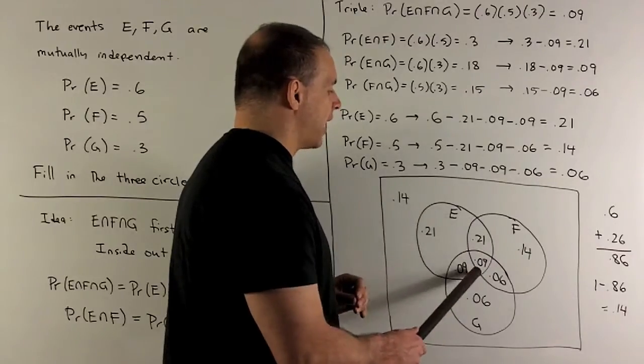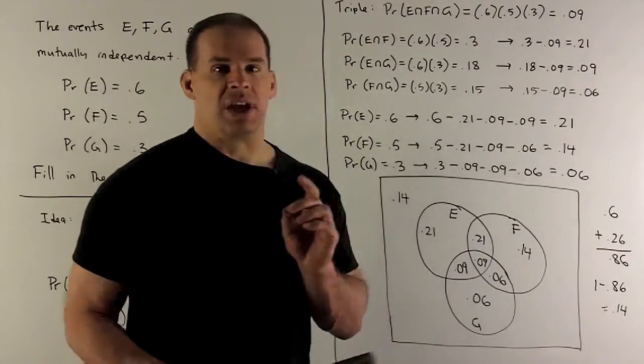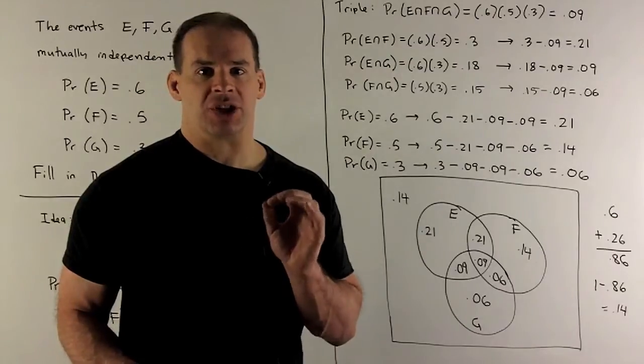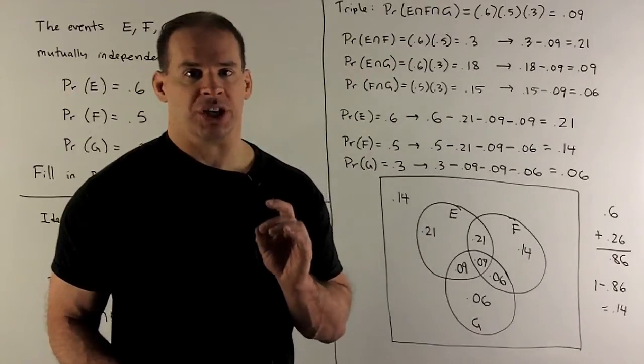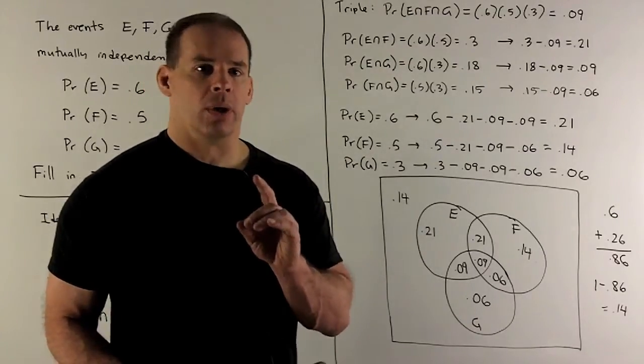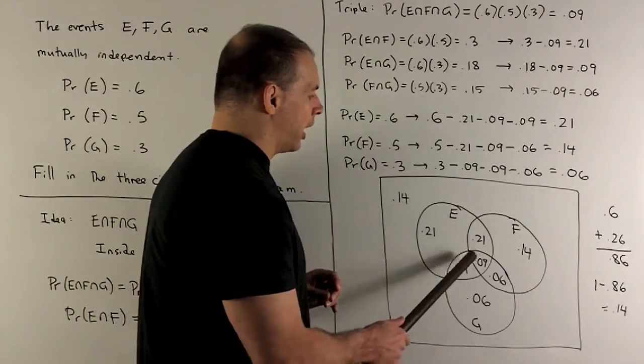So that's E intersect F. Same procedure gives us E intersect G and F intersect G. So once we do those, we'll have these four items here.